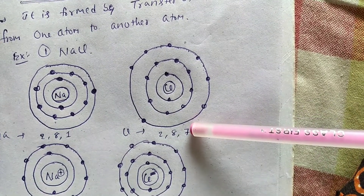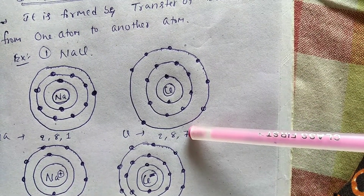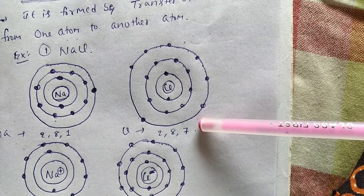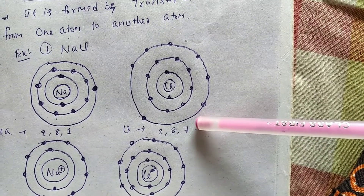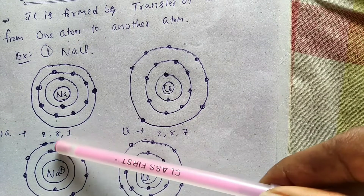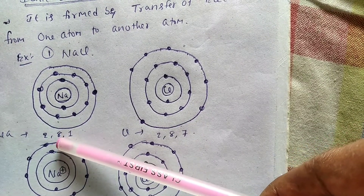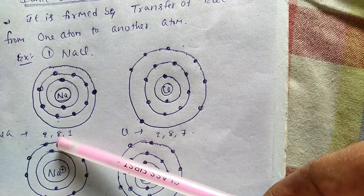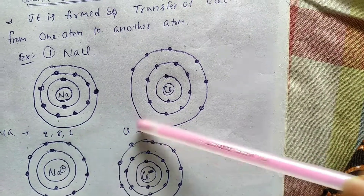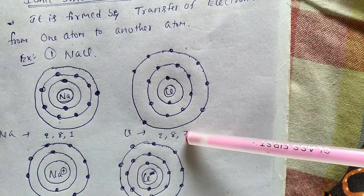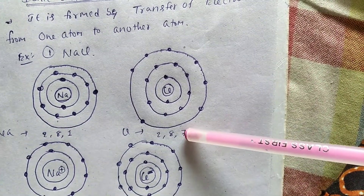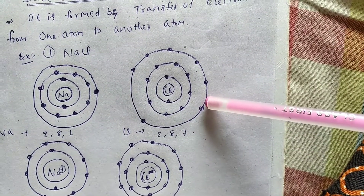Sodium contains one electron in its valence shell; chlorine contains seven electrons in its valence shell. To contain eight electrons in the valence shell and become stable, if sodium loses one electron, its valence shell becomes the second shell containing eight electrons — achieving octet configuration. If chlorine gains one electron: seven plus one equals eight, so its valence shell also contains eight electrons.